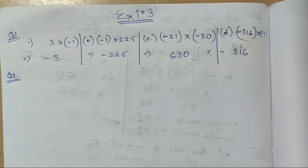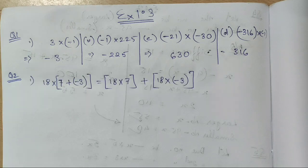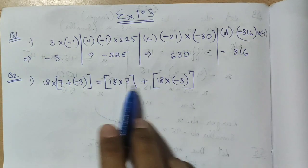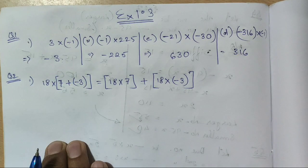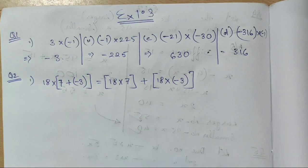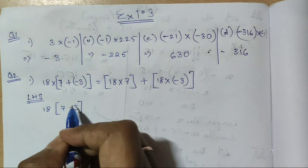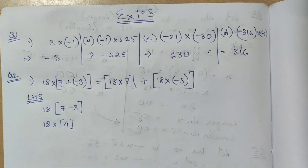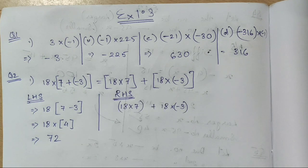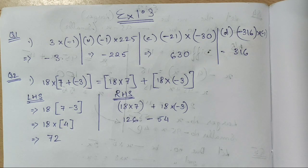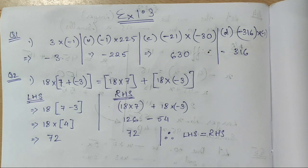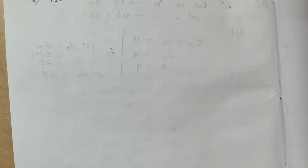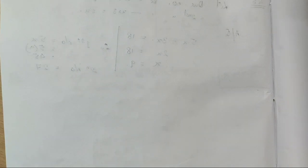In question 2 we need to verify that LHS equals RHS. We calculate the LHS and RHS separately and check if the answers are equal. Breaking up the negative sign, we get our LHS value. Similarly solving for RHS, we get the same answer. Therefore LHS equals RHS. You can do the second part of question 2 in the same manner.